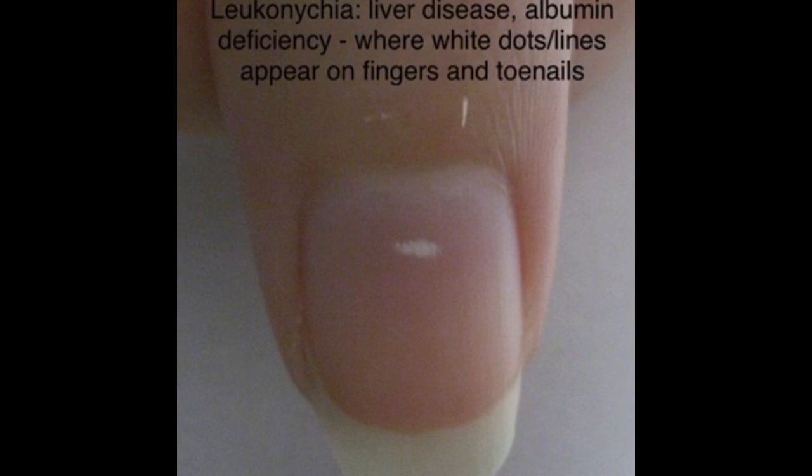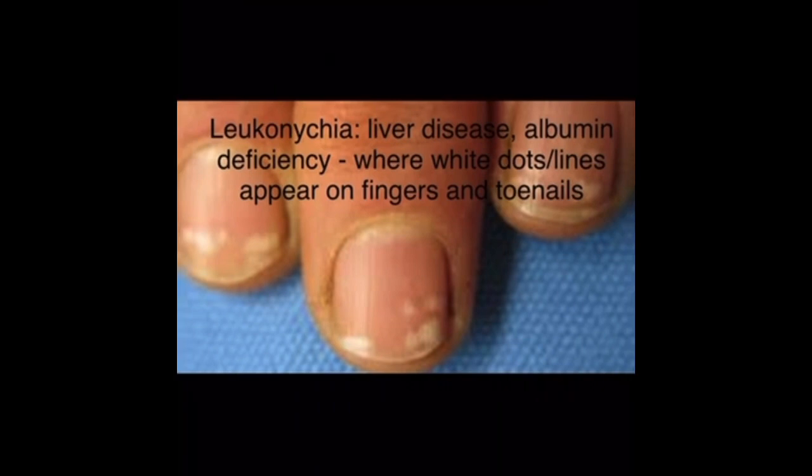This condition, as you can see, shows white dots or lines in the fingers — this is called leukonychia. Leukonychia can be due to liver disease or it can be due to a deficiency of a protein in the body called albumin.